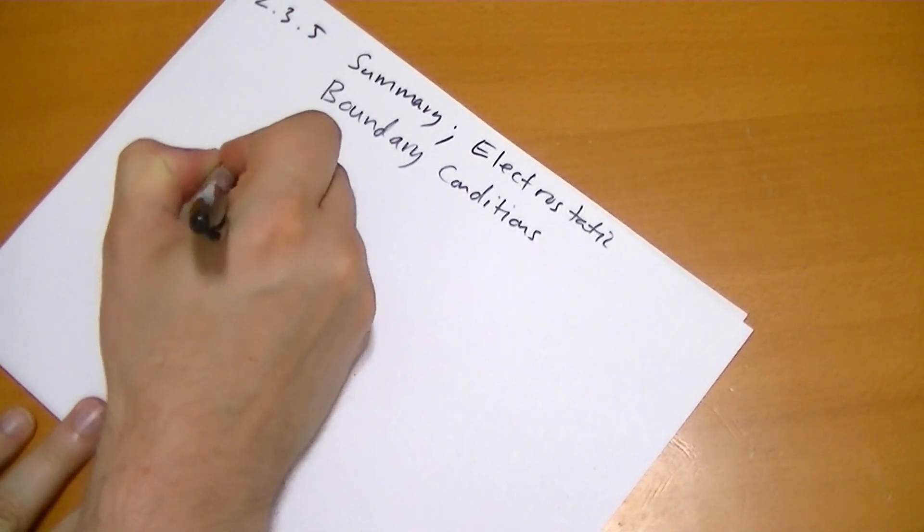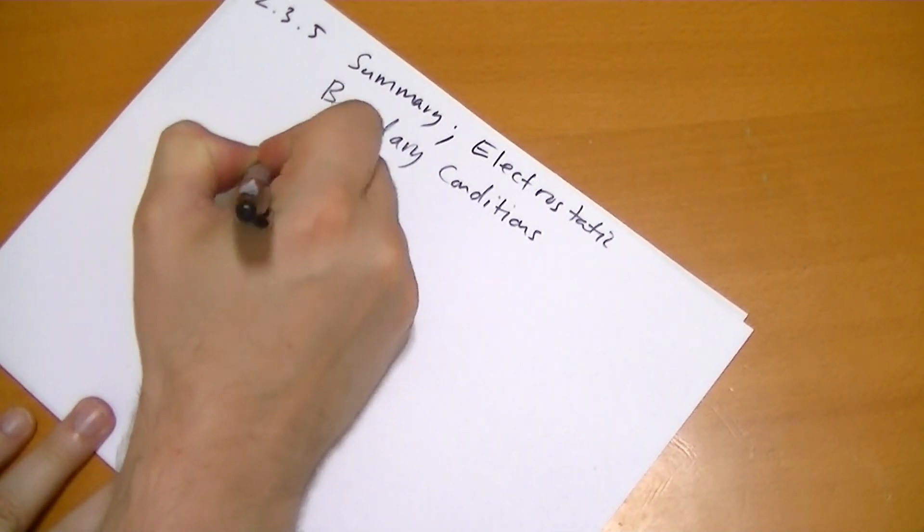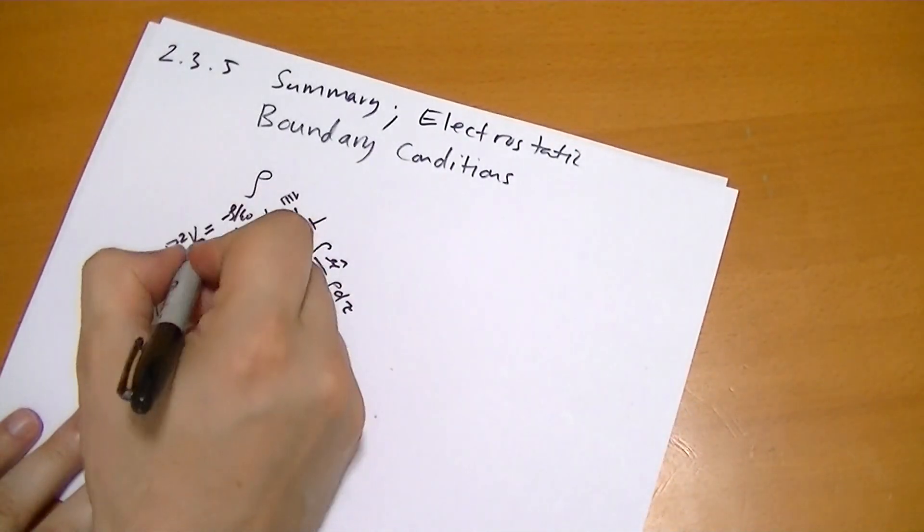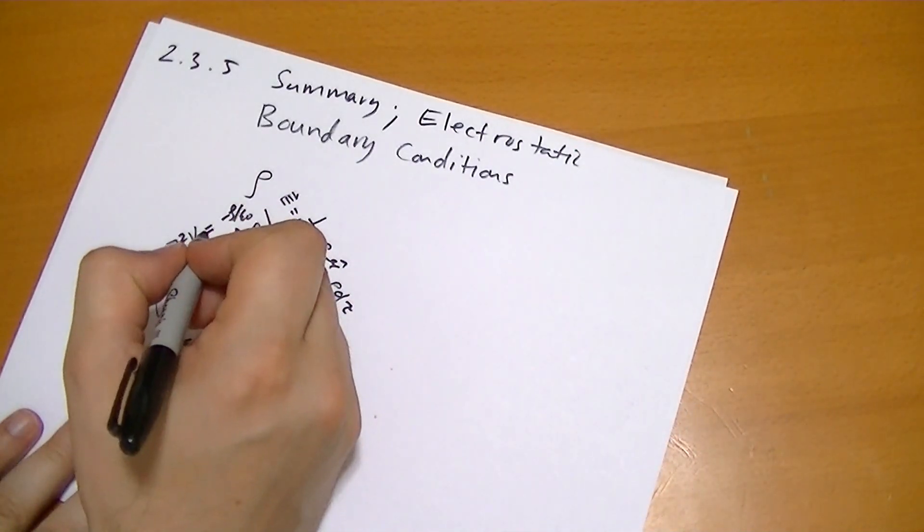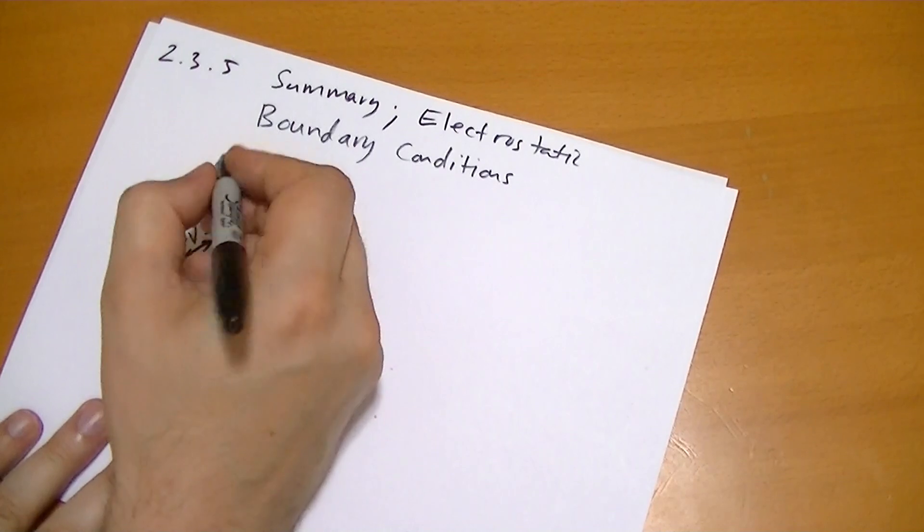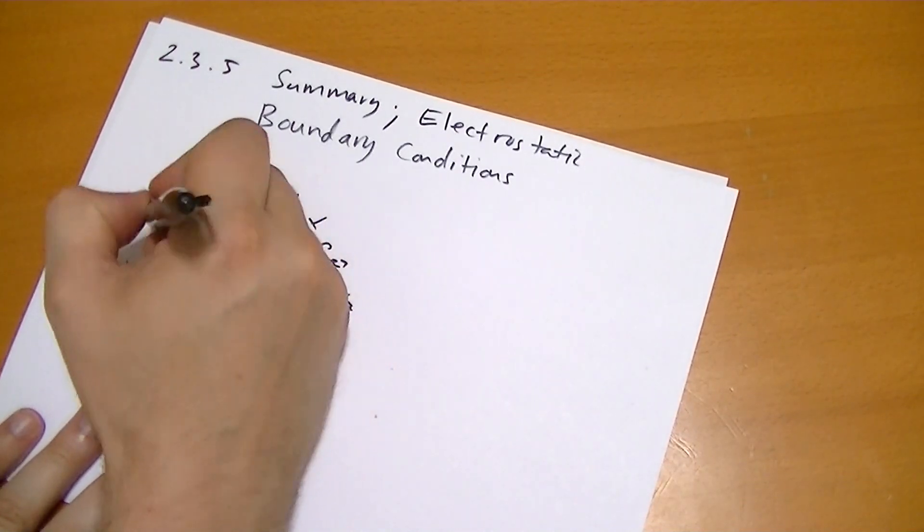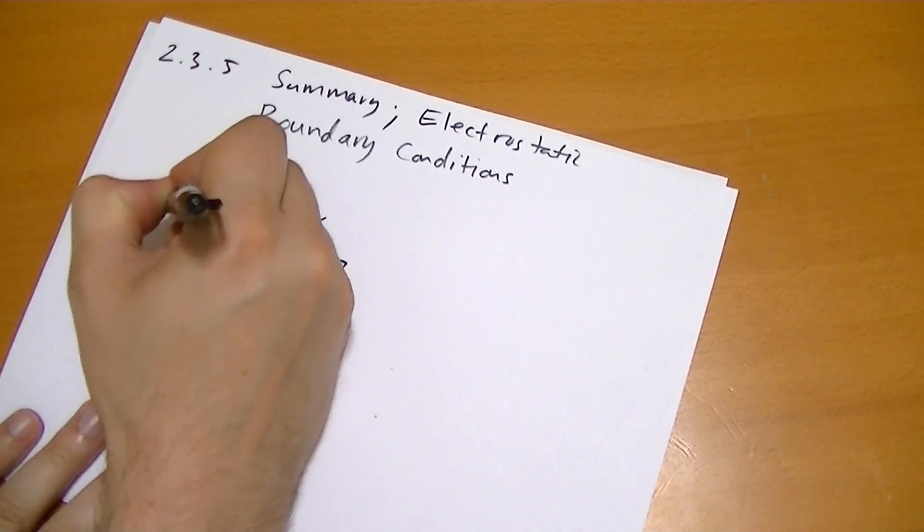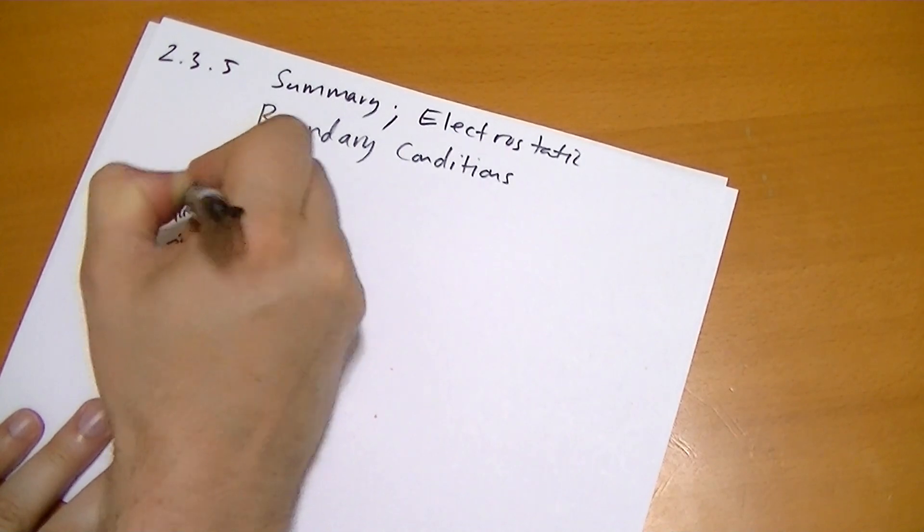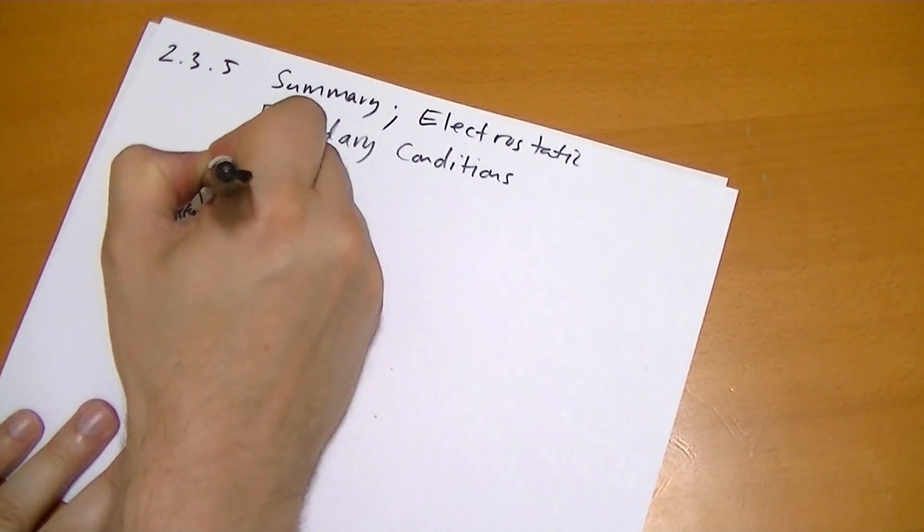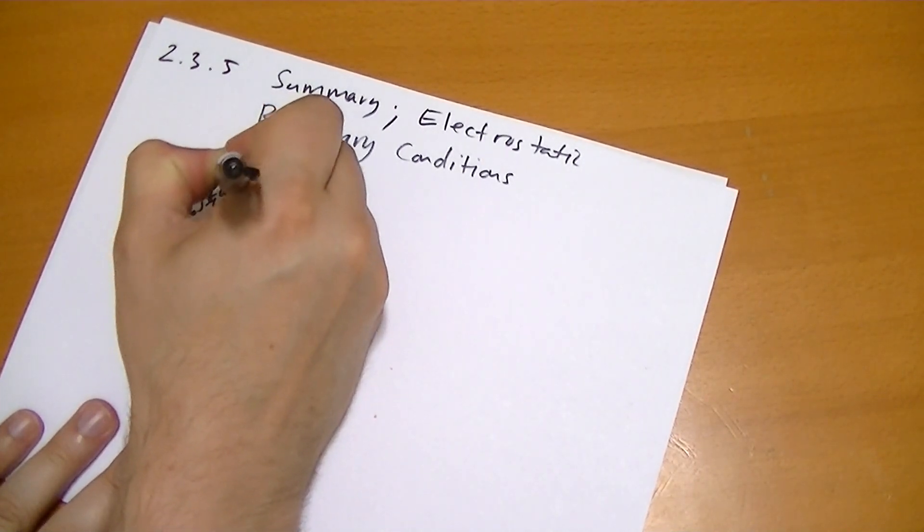where the Laplacian of V is equal to minus rho over epsilon naught. So this way... no, no, no, this way. And if we're given the density, charge density, we can find the potential with the simple equation rho over r d tau.